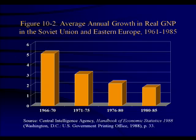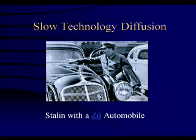This chart shows the average annual growth rate in real GDP in the Soviet Union and Eastern Europe between 1961 and 1985, based on CIA estimates, which were a little less optimistic than Soviet estimates. In any case, it shows a steady decline in growth rates. An example of Soviet technology being somewhat backward is the luxury automobile called the ZIL. There's a picture of Stalin proudly with his hand on the windshield of a ZIL automobile. Only the communist hierarchy got to own and drive these vehicles, and as you can see, the design was considerably behind that of Western automobiles.